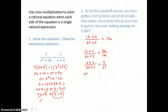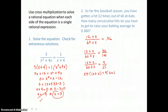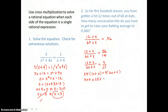We can set cross products equal to one another. So 25 times (12 plus x) is equal to 9 times (60 plus x). Distributing on the left, I've got 25 times 12, which is 300, and 25 times x is 25x. On the right I have 9 times 60, that's 540, and 9 times x.